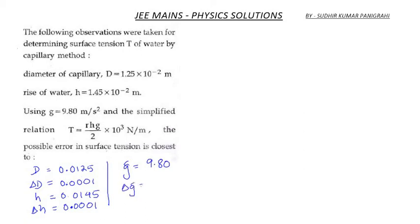So delta g can be written as 0.01. Now if we calculate delta T by T into 100 in terms of percentage, it will be equals to delta d by d into 100 percentage plus delta h by h into 100 percentage plus delta g by g into 100 percentage.